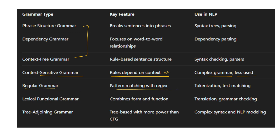Another grammar can be regular grammar. Here pattern matching is done, tokenization, text matching is done. Lexical functional grammar combines form and functions—translation, grammar checking. Tree adjoining grammar is also there.